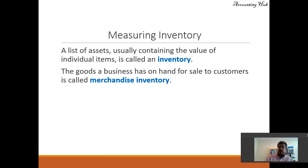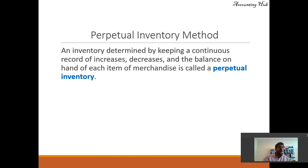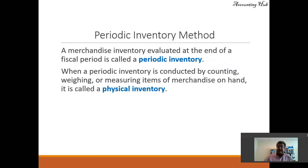The goods a business has on hand for sale to customers is called merchandise inventory. We have two methods. Perpetual: an inventory determined by keeping a continuous record of increases, decreases, and the balance on hand of each item of merchandise. Usually large companies work on that. However, small companies — that is our topic here — they use the periodic inventory method.